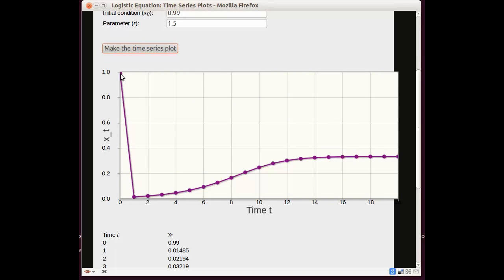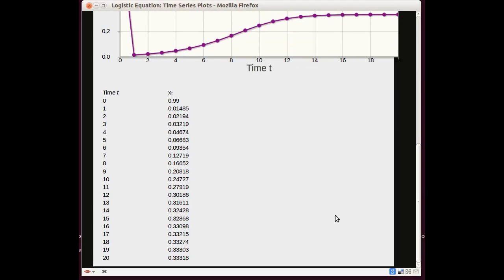Because we're very close to the annihilation parameter. We're very close to having so many rabbits that there's no food left for anybody. So the population dips very dramatically. And then it grows up to the same stable fixed point we've seen at a third. And here are the raw numbers for that.